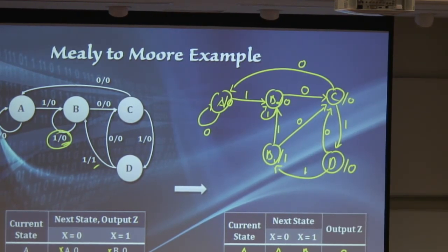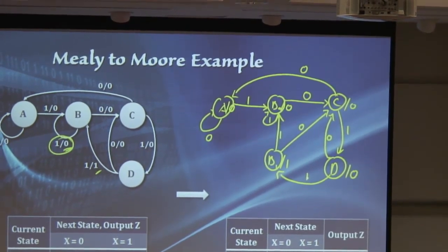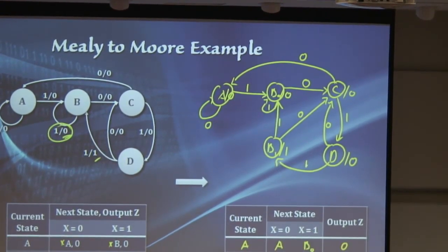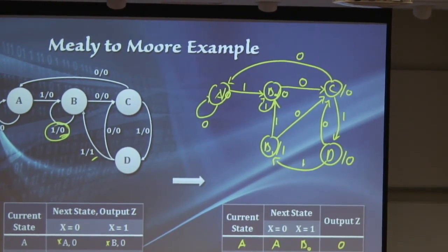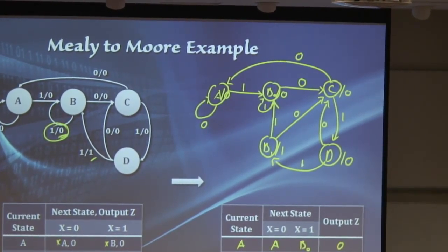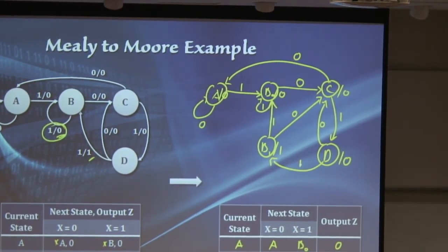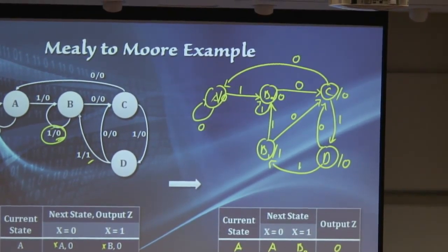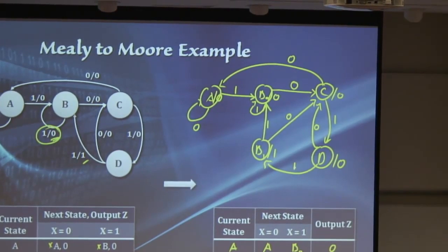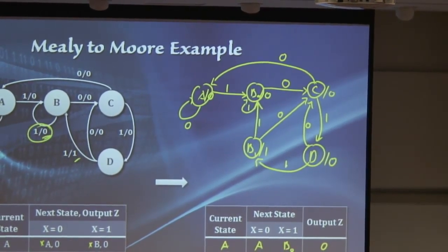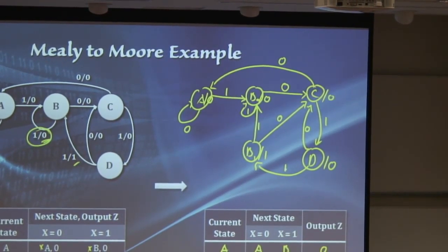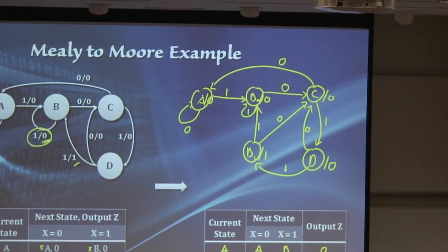This is how we convert from Mealy to Moore. As you can see, the Moore machine usually has more states because we have to split states, so the circuit will probably be a bit larger to design. That's all for this lecture. I'll see you in tutorials and next week.